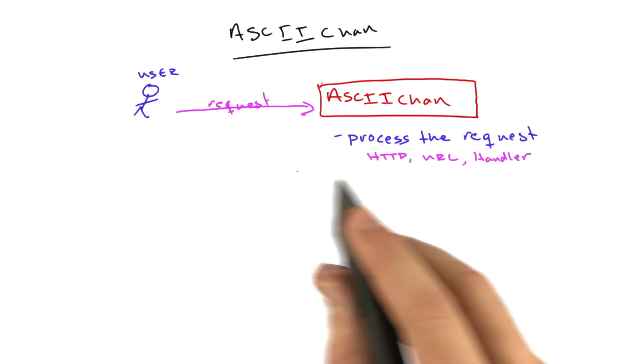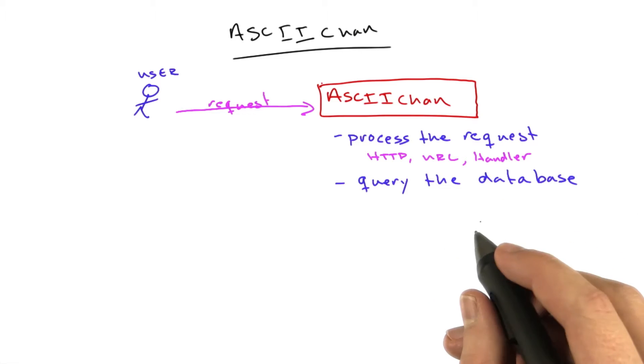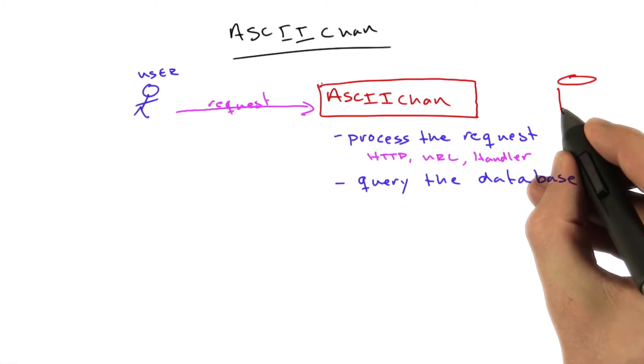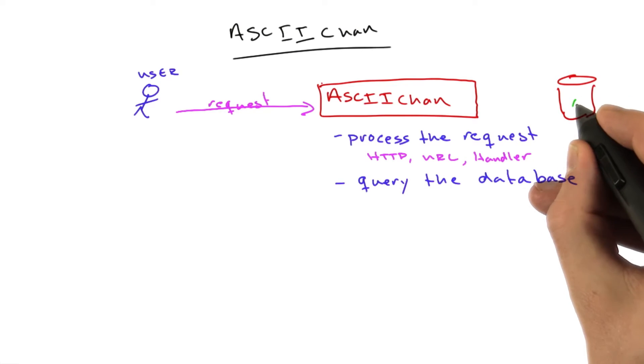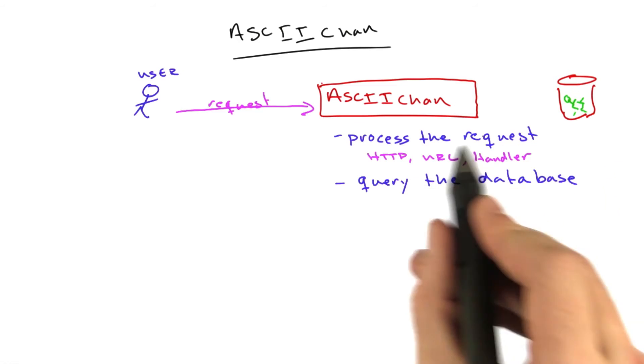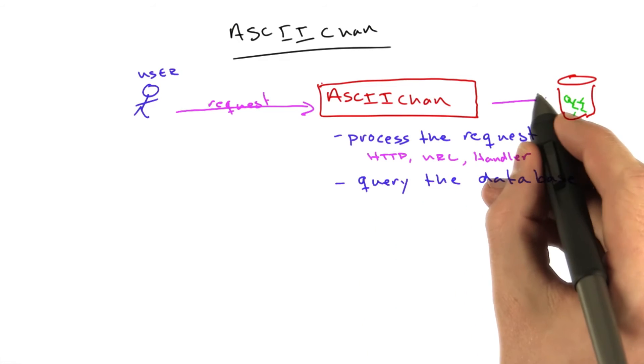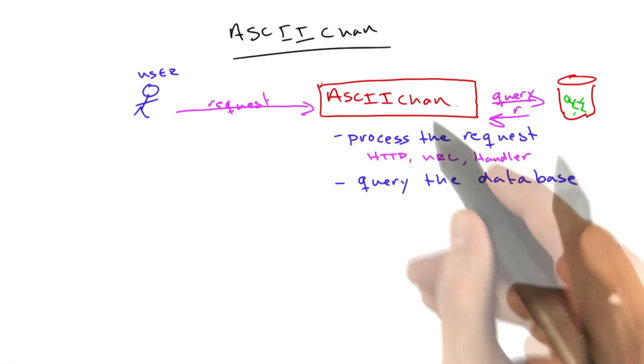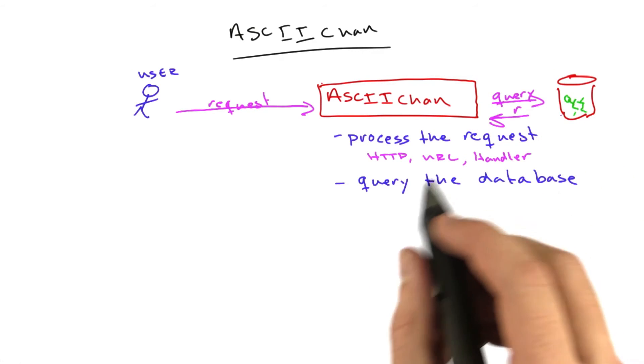The next thing we do, which is much more substantial, is we query the database. We have ASCII-CHAN in our program, and then we have our database that is full of ASCII art of little animals and stuff. Our program makes a request to the database, which runs and gives us our response. Depending on the complexity of this query, this can take a lot of time.